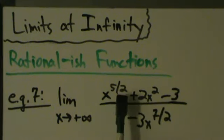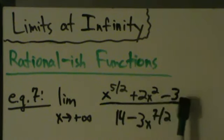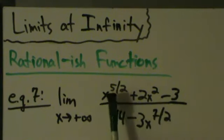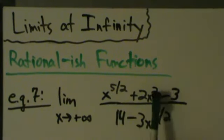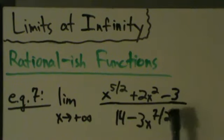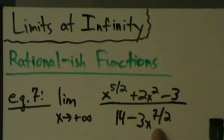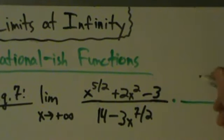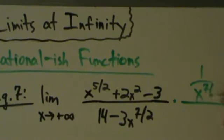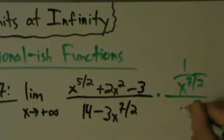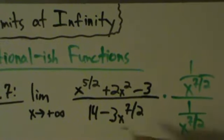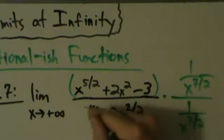So here we have x to the 5 halves, x to the second power, and just constants on top. On the bottom we have x to the 7 halves — that's 3.5 — and that's the highest power of x that appears. 5 halves is 2.5, here's 2, and x to the 0 for the constants. So the highest power is x to the 7 halves. What we're going to do is multiply the top by 1 over x to the 7 halves, and multiply the bottom by the same thing.